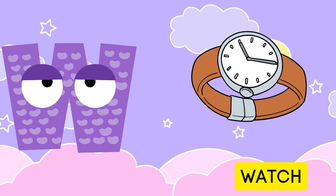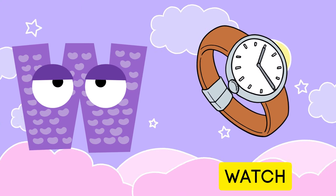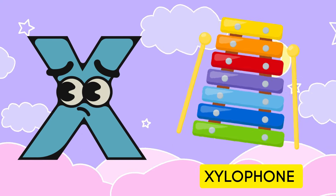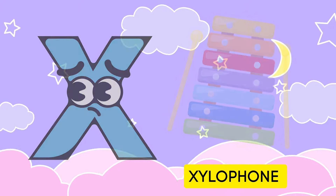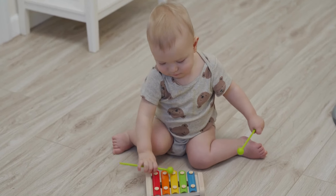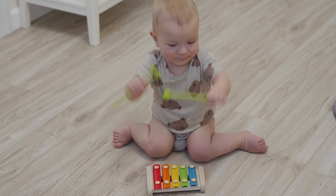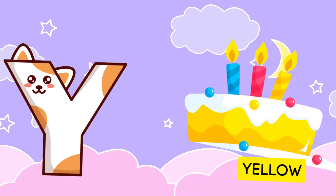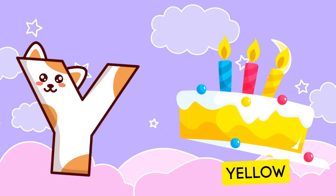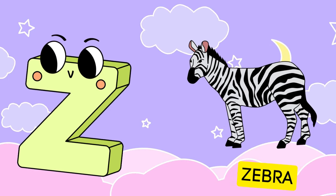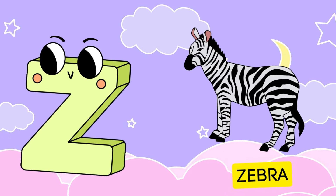W is for watch, w-w-watch. X is for xylophone, x-x-xylophone. Y is for yellow, ye-ye-yellow. Z is for zebra, z-z-zebra.